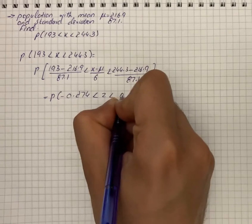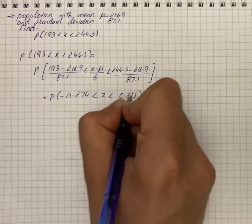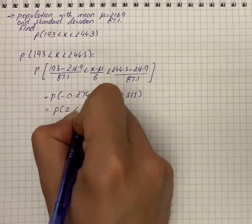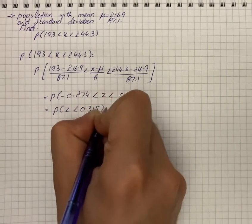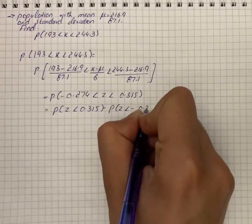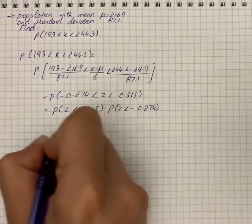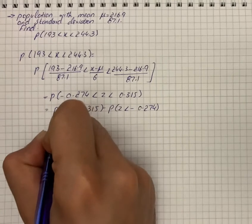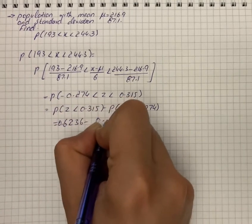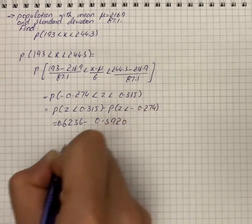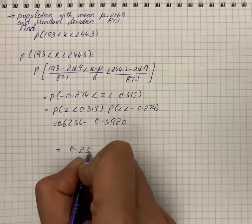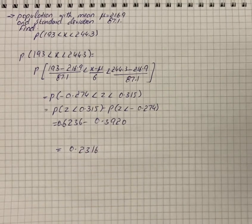P(-0.274 < Z < 0.315) equals P(Z < 0.315) minus P(Z < -0.274), which is 0.6236 minus 0.3920. So our answer is 0.2316, which is the required probability.